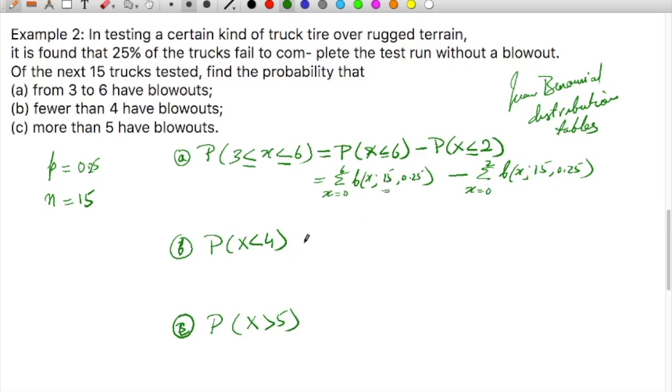Now in the second part, consider the distribution: 0, 1, 2, 3, 4, 5, and so on. In this case, if you have to find out the probability for less than 4, less than 4 is nothing but the summation up to 3. So that is probability of X less than or equal to 3, which I may write as summation X equals 0 to 3, B(X; 15, 0.25).